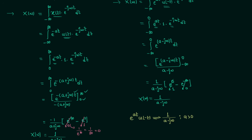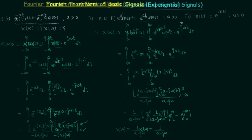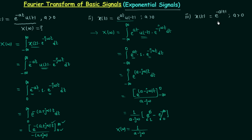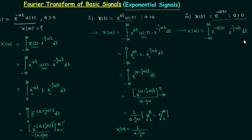Now we will move to the third type of exponential signal. In this case we have e power minus a|t|, where a is positive. We will follow the same steps to obtain the Fourier transform: integration minus infinity to infinity of e power minus a|t| multiplied by e power minus j omega t, dt. We know |t| equals minus t from minus infinity to 0, and equals t from 0 to infinity.